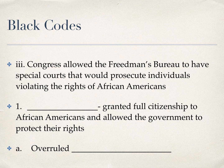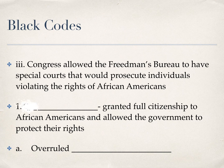We're going to see how Andrew Johnson dealt with the Freedmen's Bureau and the Civil Rights Act of 1866. Congress allowed the Freedmen's Bureau to have special courts that would prosecute individuals violating the rights of African Americans. To have special courts different from other courts in the United States is a very strange thing, but it was a very strange time. Congress tried to pass laws to help African Americans gain new rights, one of which was the Civil Rights Act of 1866.